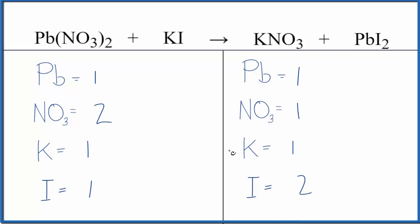It looks like what we need to do is double our nitrates here. We could do that by putting a two in front of the potassium nitrate. So now we have our one nitrate times two, those are balanced, and then we have our one potassium times two. So now we have two potassiums.